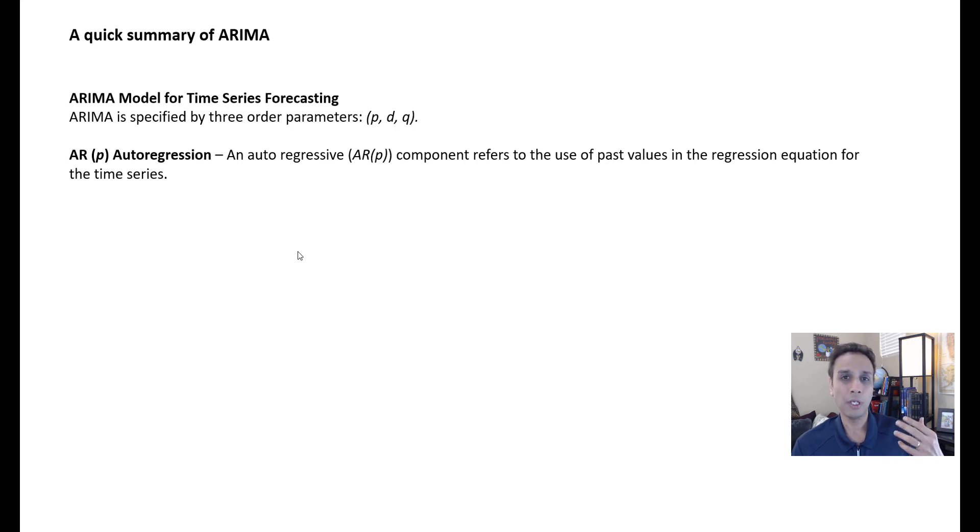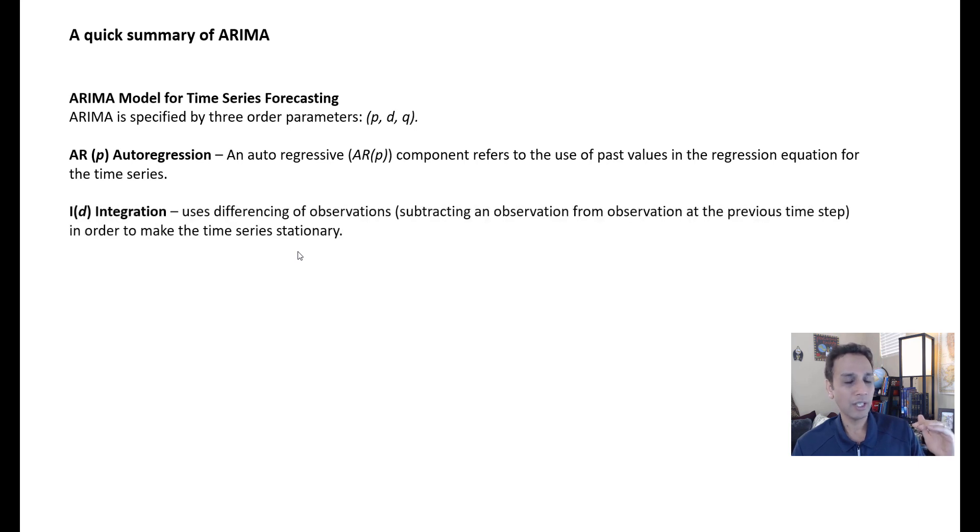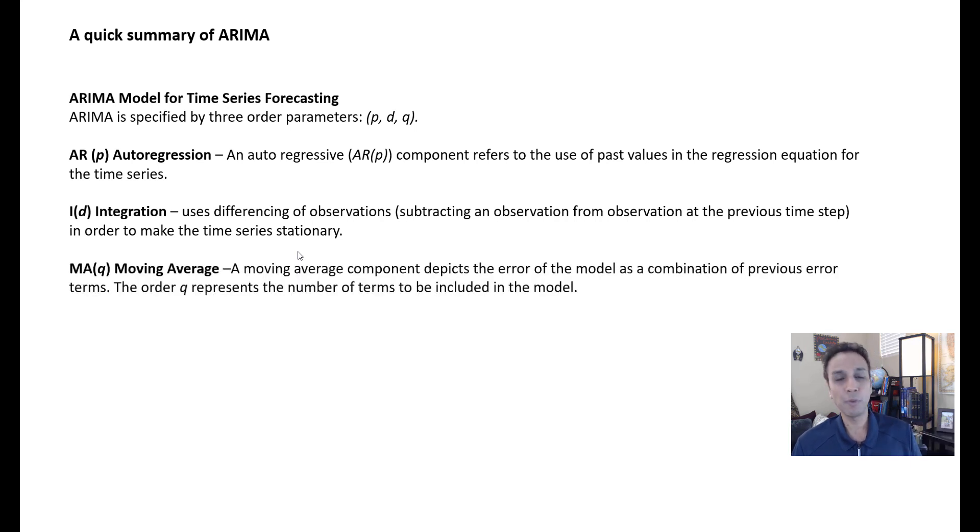AR stands for autoregression and we have a term called lowercase p - you'll also see uppercase P depending on seasonality. The P component controls the autoregression. I is the integration which uses the differencing of observations, represented by parameter D. Moving average is represented by parameter Q.